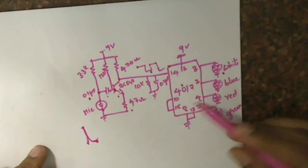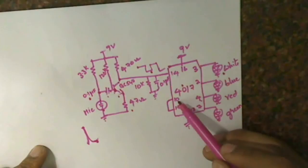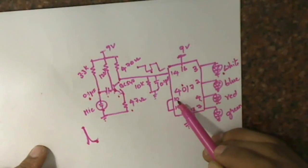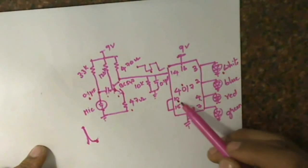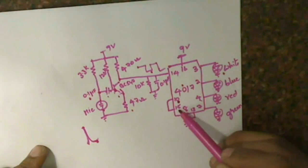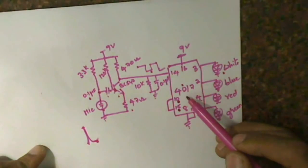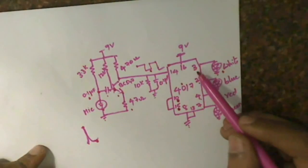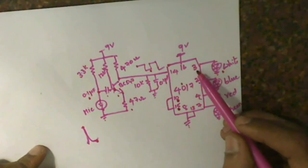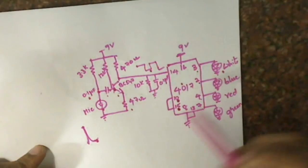For the next clock cycle, green will be on and the other three will be off. So the fifth time when I clap, the 4017 will shift to the next state — that's the tenth pin, the fifth output. For my next clap, the tenth pin will be high and this is connected to the reset pin of the 4017 — that's the fifteenth pin. And this will shift the 4017 to its default state, the first state — third pin. So again the third pin will be on and the white will be on. So this is how this circuit works.